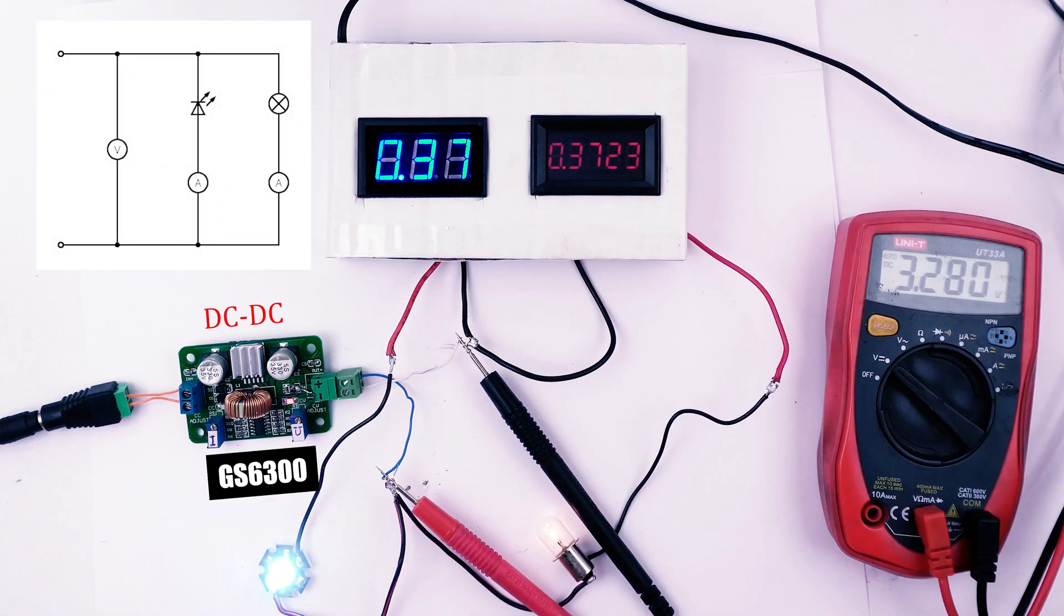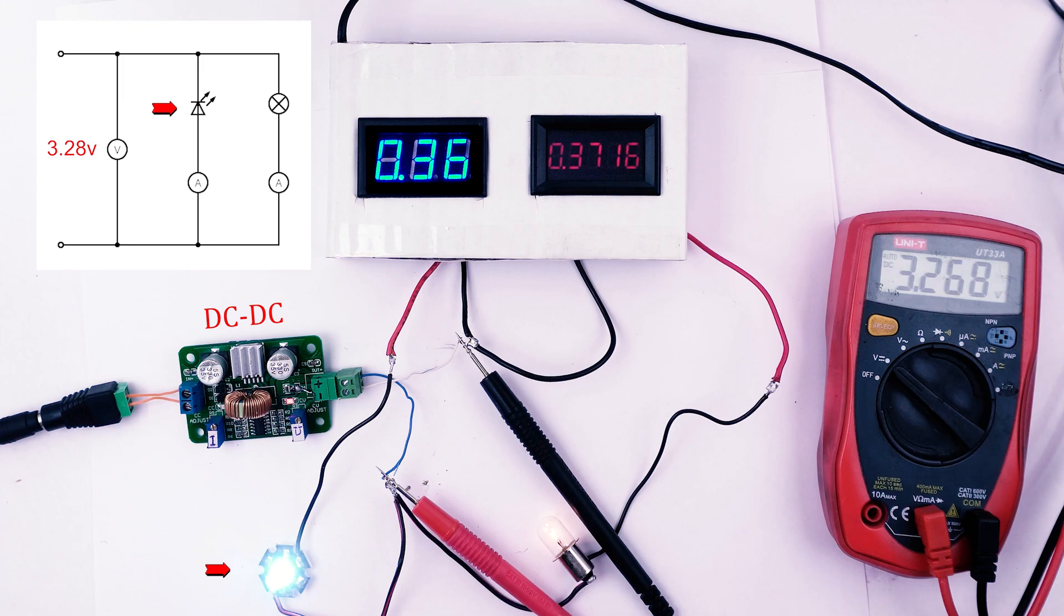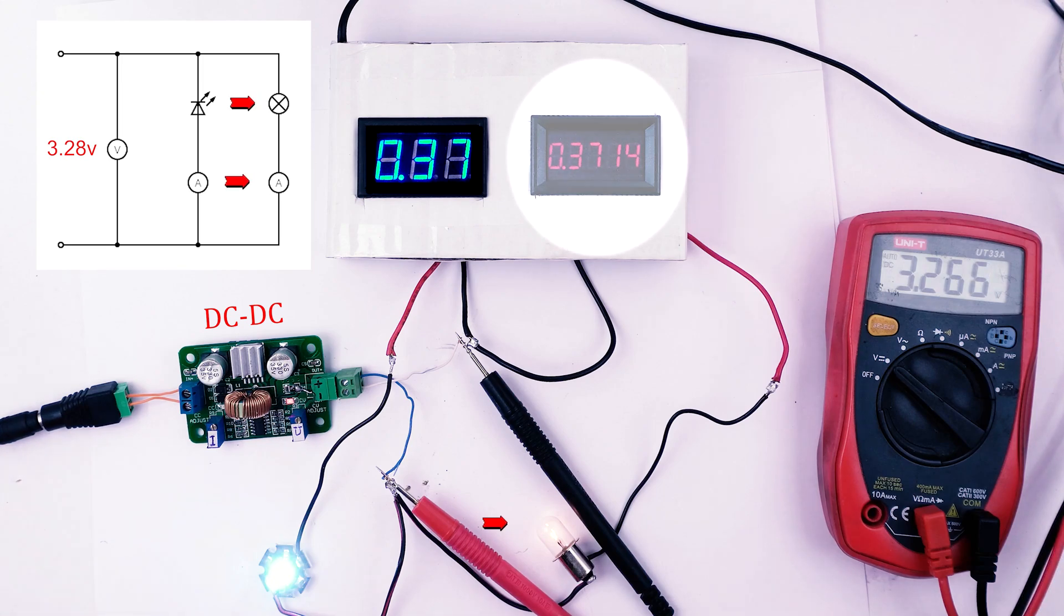This is a DC-DC step-down converter board, set to output 3.28V. This is the LED. The current that flows through it is shown on this ammeter. And this is the light bulb. We can see its current on this ammeter.